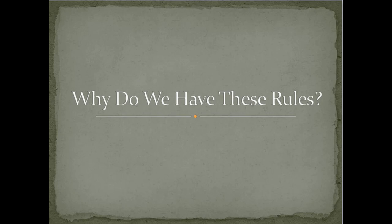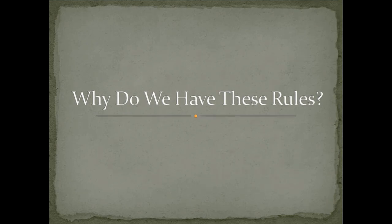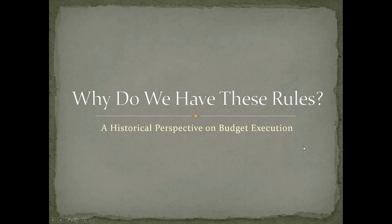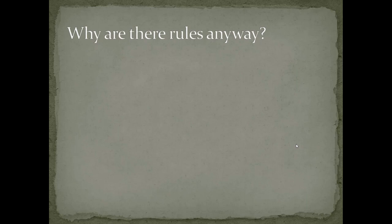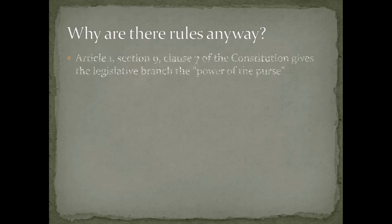Why do we have these rules? This is a historical perspective on budget execution — why do we have rules anyway in budget execution, and how did they get started? It all begins with the Constitution: Article 1, Section 9, Clause 7 gives the legislative branch the power of the purse.